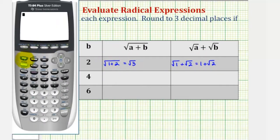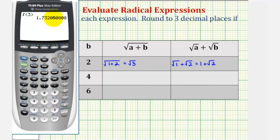So we first have the square root of three. To round to three decimal places, we'll look to the fourth decimal place to decide if we round up or down. If the fourth decimal place is five or greater, we round up; if it's four or less, we round down. Here it's a zero, so we round down, which means we leave it as one point seven three two.